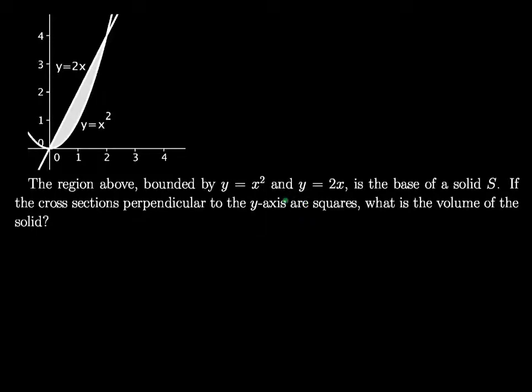Okay, another volume example. The region above bounded by y equals x squared and y equals 2x, so we have 2x on top right here. I'll do that in green. That's really kind of bad, but close enough. And x squared is the parabola right here on the bottom.